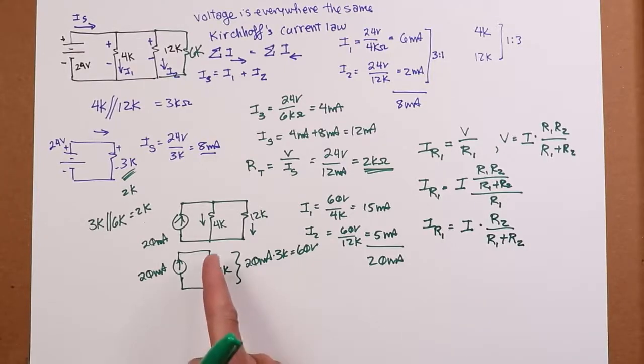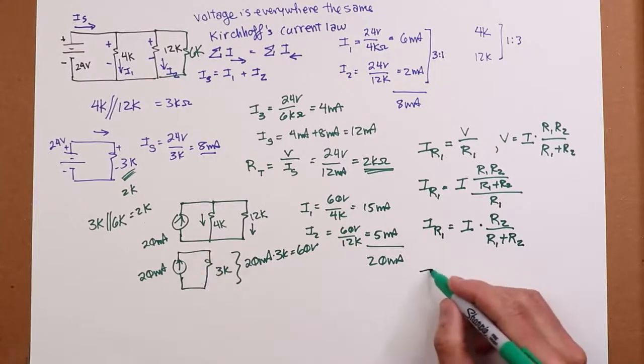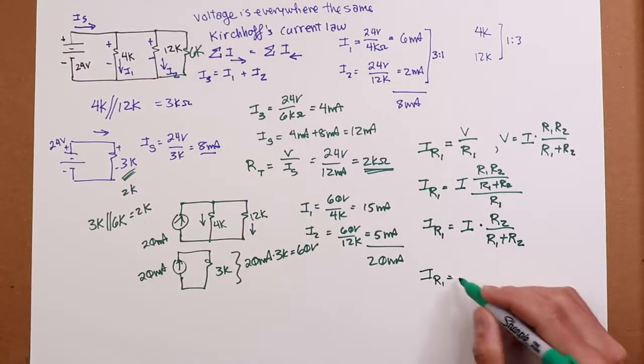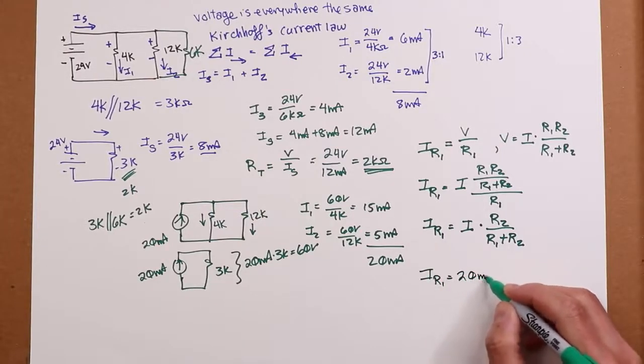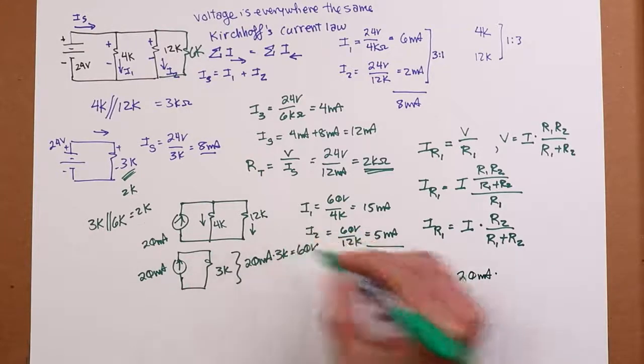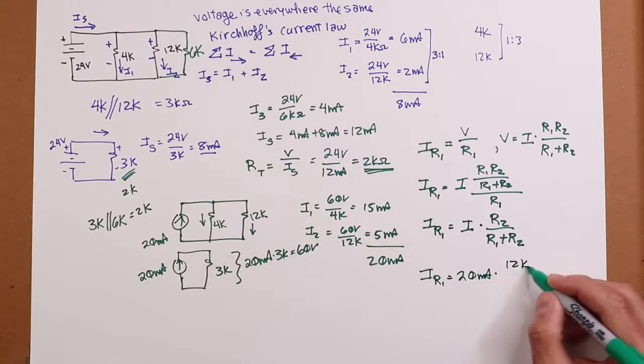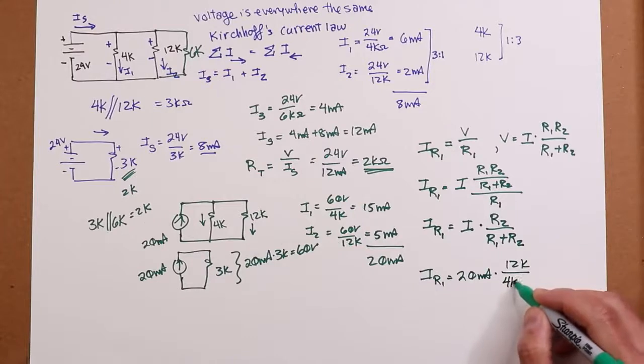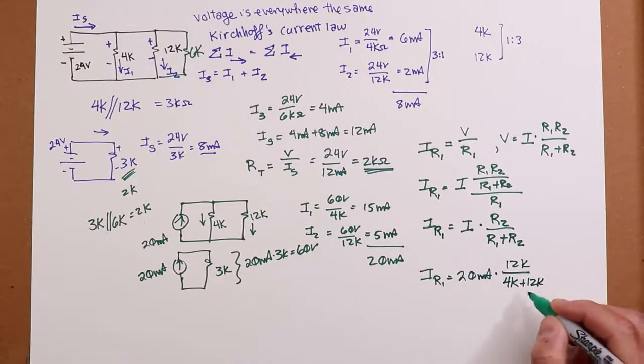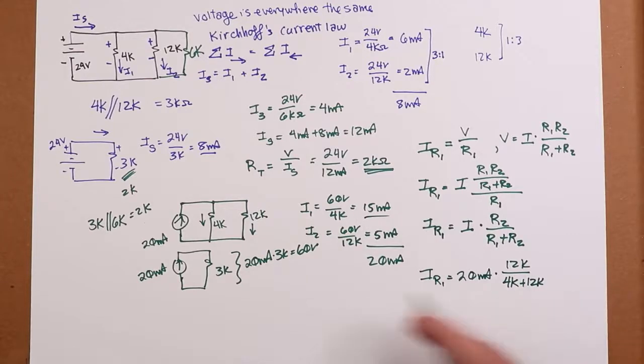So we could just say, I want to find the current through the 4k. So that would be the entering current, which is 20 mils, times the opposite resistor, 12k, over the sum, 4k plus 12k, 16. So it's 12 over 16, which is 3 fourths. 3 fourths of 20 is, bingo, 15 milliamps. Beautiful. So this works out really well. We call this the current divider rule.